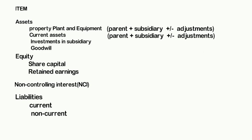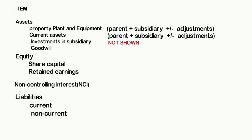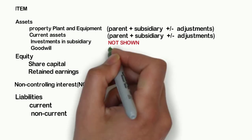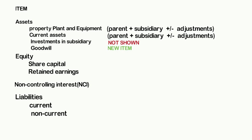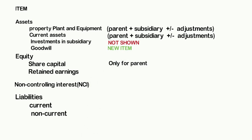Investment in subsidiary is not shown in the consolidated balance sheet. Goodwill is a new item that arises when the consideration paid exceeds the worth of the subsidiary's net assets acquired, and it appears on the face of the consolidated balance sheet. In equity, share capital represents control.